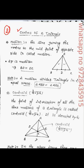What is the median? The median is the line joining from the vertex to the midpoint of the opposite side. This is the median — BD is equal to DC. A median divides the triangle into two equal areas; these two areas are equal.